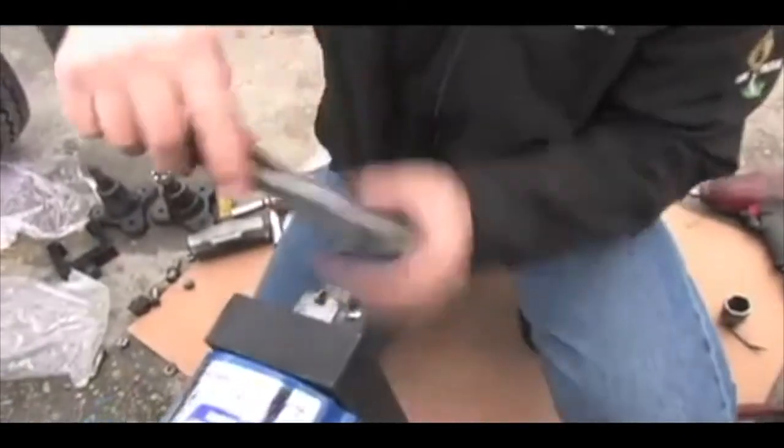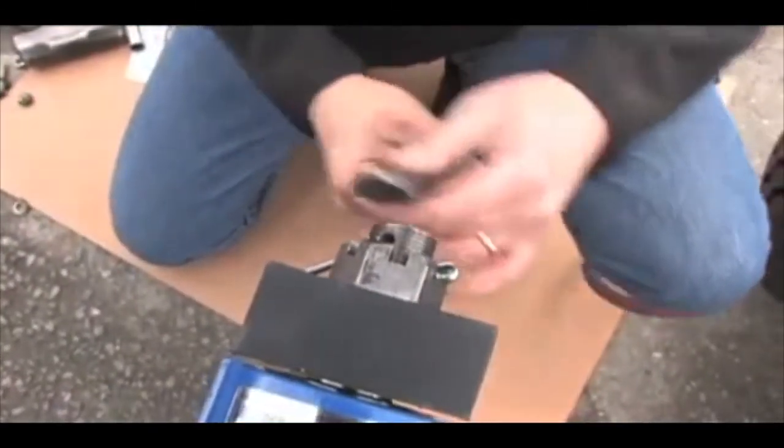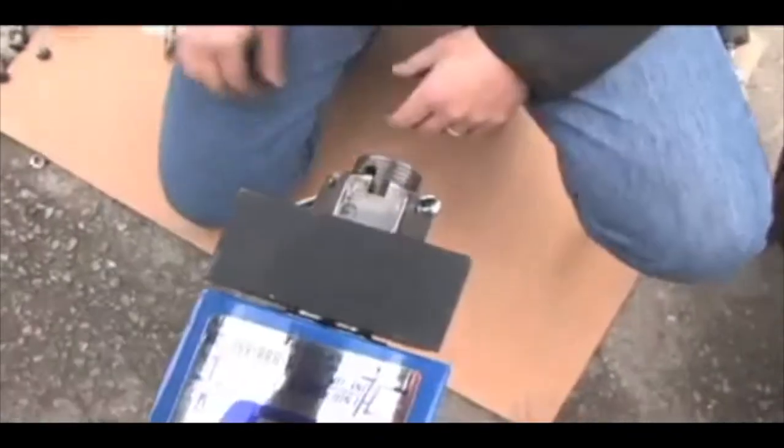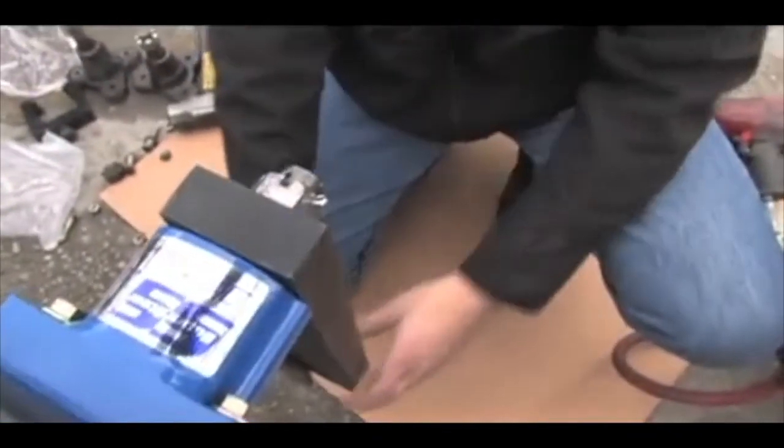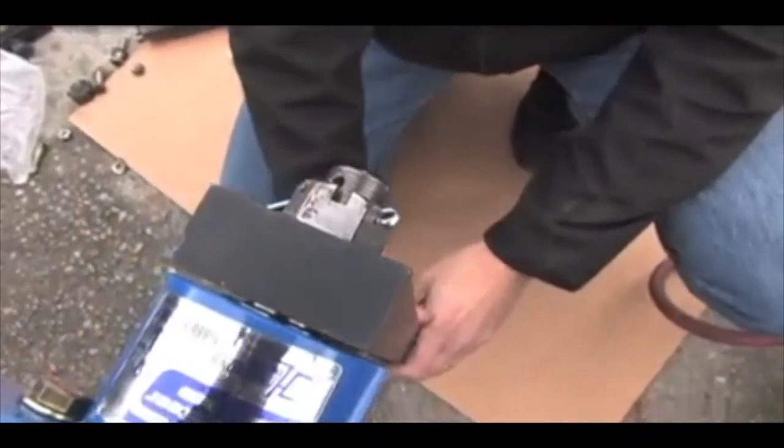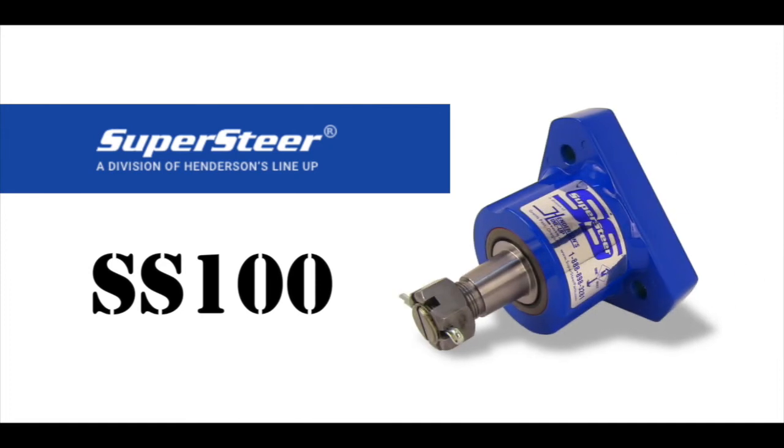So now it'll turn nice and free. You won't have any play in it. It's nice and solid. And that completes the installation on the SS100 bell crank. Thank you for your time. It's John at SuperSteer.